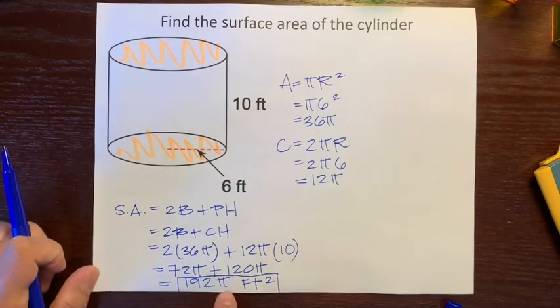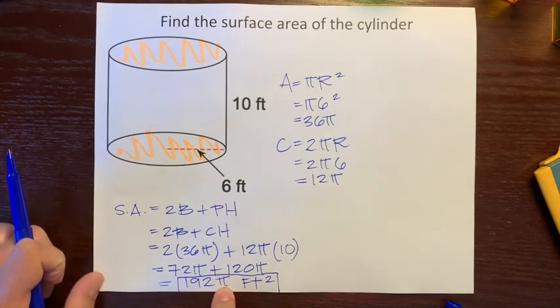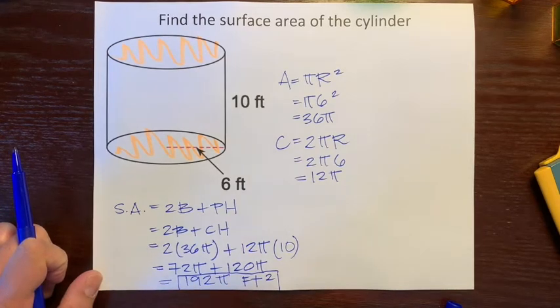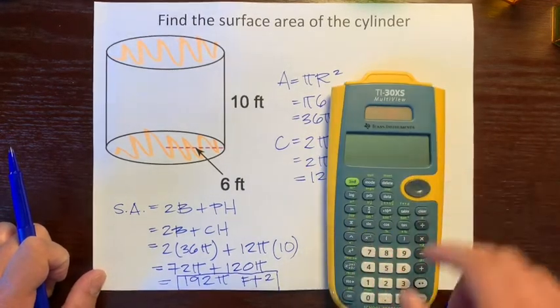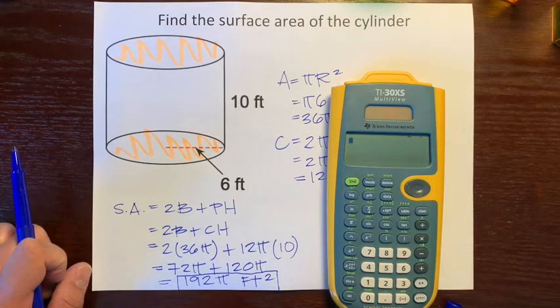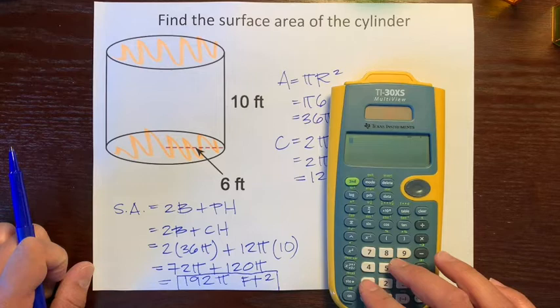One thing to remember is, don't forget the pi, because the final answer is 192 pi feet squared. If you forget that pi, it's totally wrong. I'll show you on the calculator.